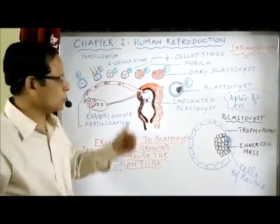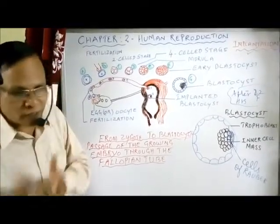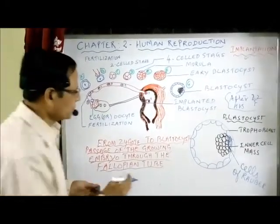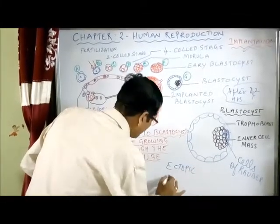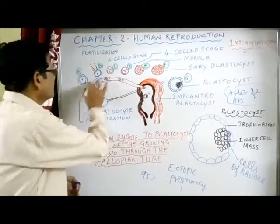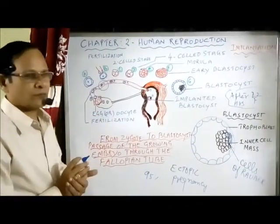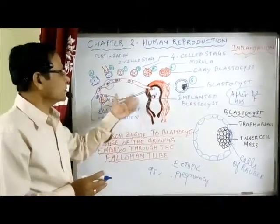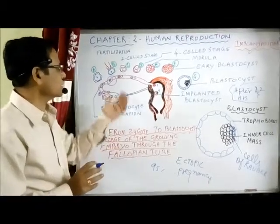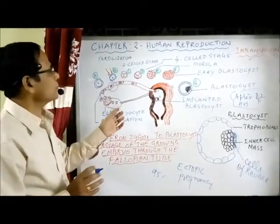The embryo gets embedded in the uterine wall — the endometrium — and this process is called implantation. Ectopic pregnancy occurs when the fertilized egg is implanted outside the uterus. 95% of ectopic pregnancies occur in the fallopian tube, particularly at the ampulla-isthmus junction. It is an abnormal condition that can cause internal bleeding, infection, and in some cases death due to rupture of the fallopian tube.